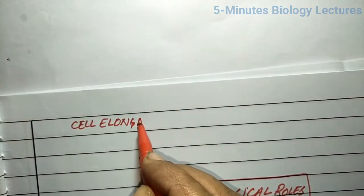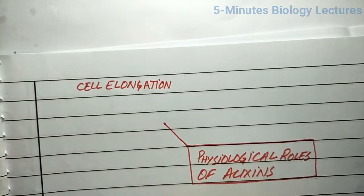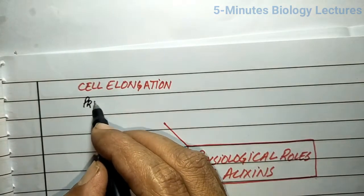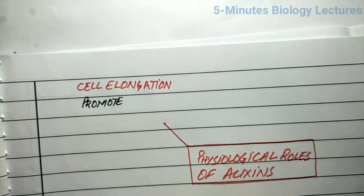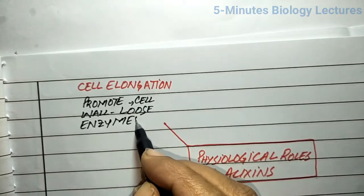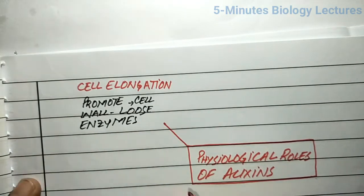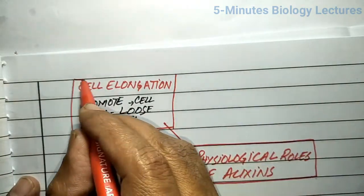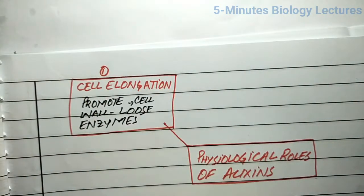Now, we will discuss some physiological roles of auxins. Auxins are responsible for cell elongation. They elongate the cell by loosening the cell wall, decreasing its pH, and activating cell wall-loosening enzymes. This loosening in the cell wall helps in elongation of the cells.